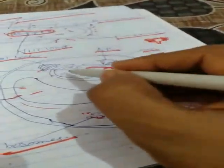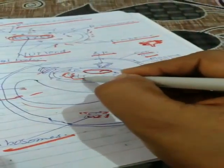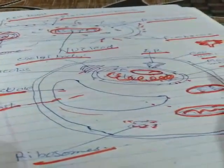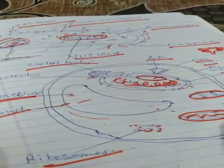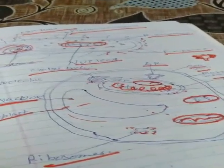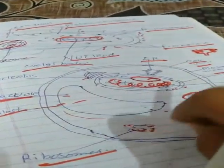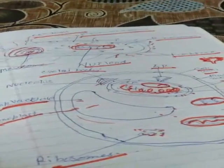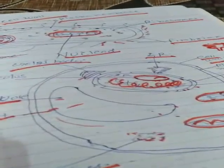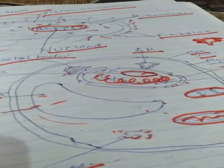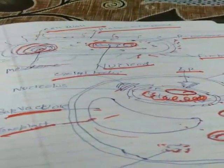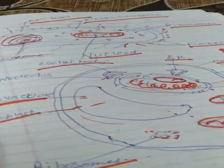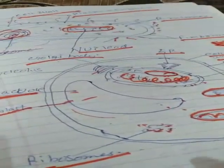Another structure is called chloroplast. Inside the nucleus, a network of thread-like structures called chromatin is present. These chromatins get condensed when the cell is getting ready for cell division and are converted into thick thread-like structures called chromosomes. These chromosomes carry genes, which are responsible for passing characters from one generation to another generation.